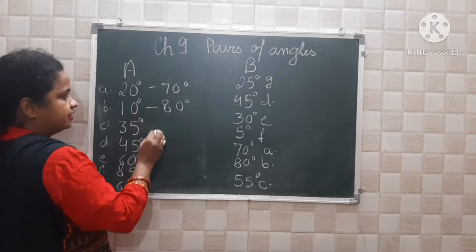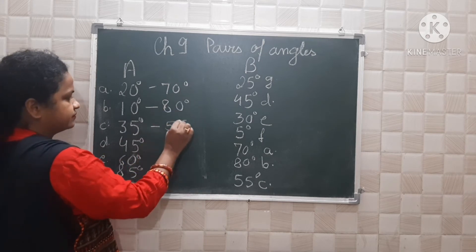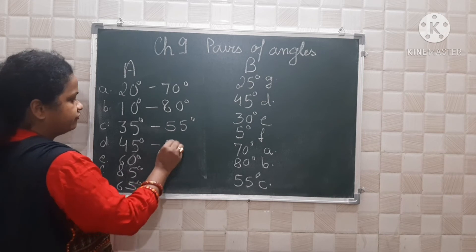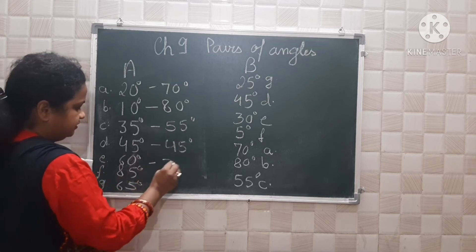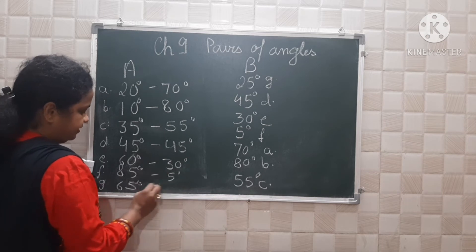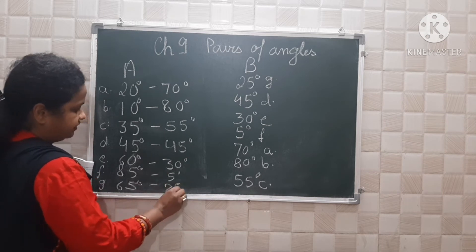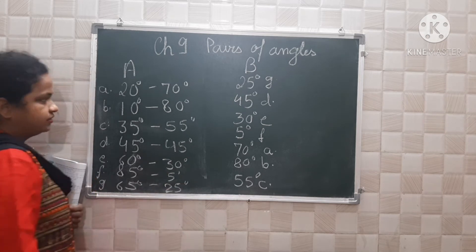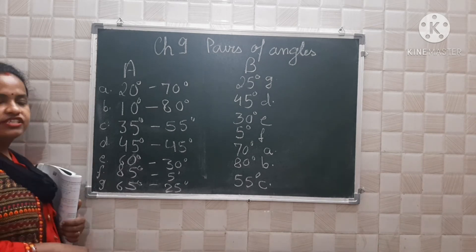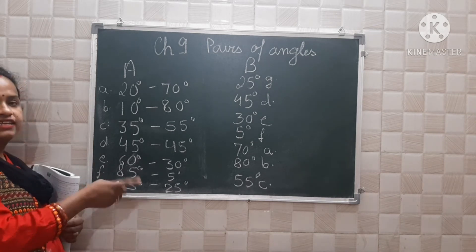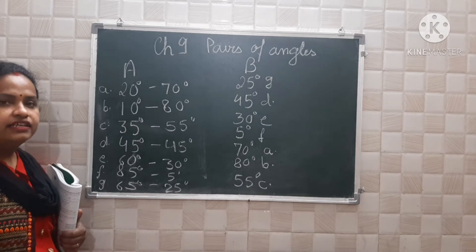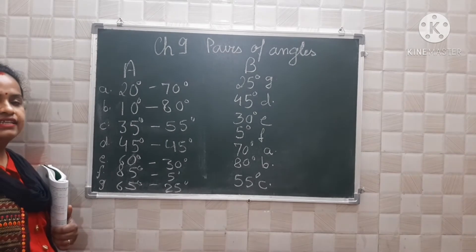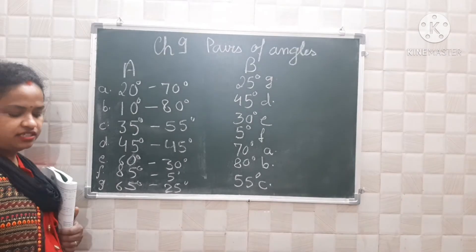So in summary: 85 and 5 degrees, 45 and 45, 60 and 30, 85 and 5 degrees, 65 and 25 degrees. This way you can match and say that they are complements to each other — you add them and confirm they complement each other.